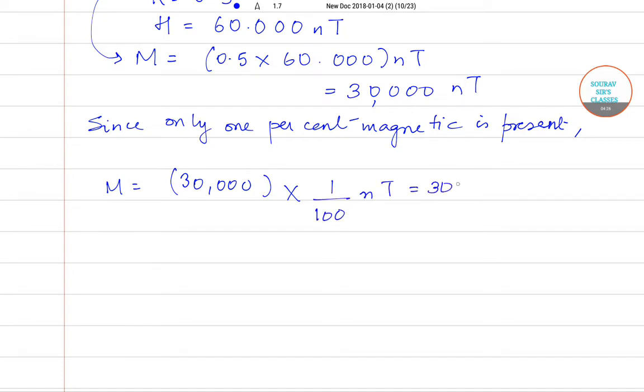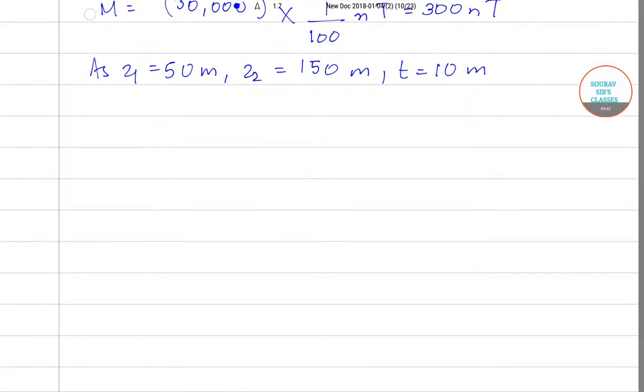Now as z1 equals 50 m, z2 equals 150 m, t equals 10 m, hence we have delta z naught equals 2 into 300 into 10, bracket open 1 by 50 minus 1 by 150.